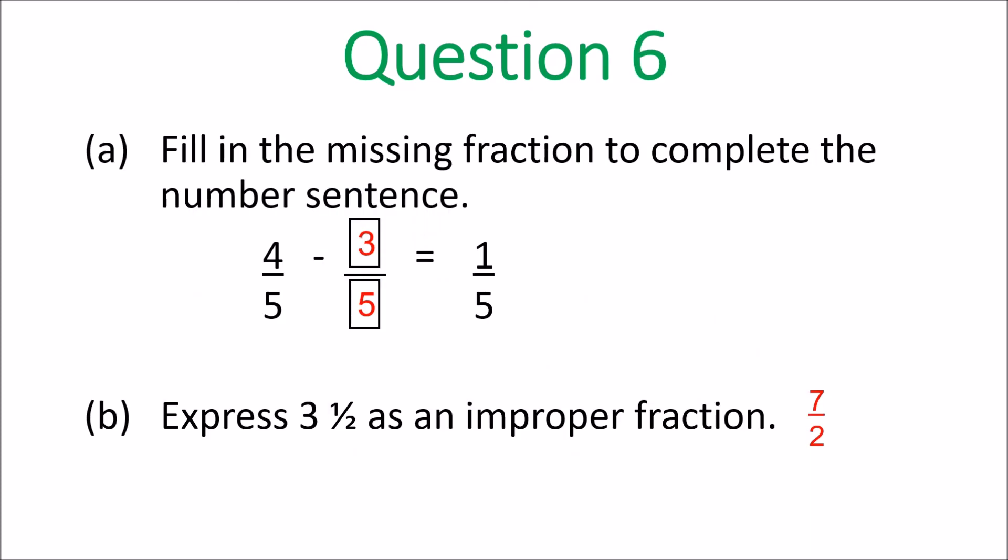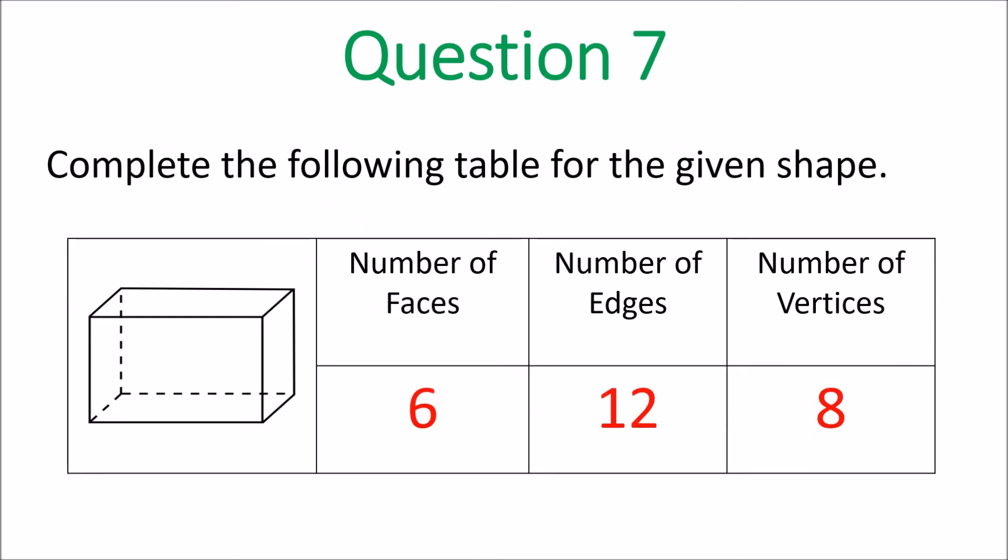Question 6. The missing fraction is 3 fifths. And then as an improper fraction is 7 halves. 7 and 2 on the bottom. Complete the following table for the given shape. Number of faces is 6. Number of edges is 12. Number of vertices is 8. Got it?